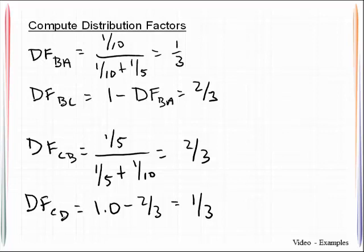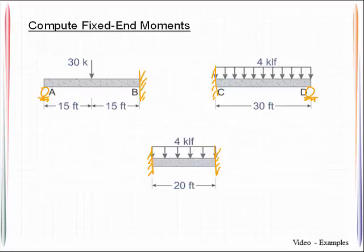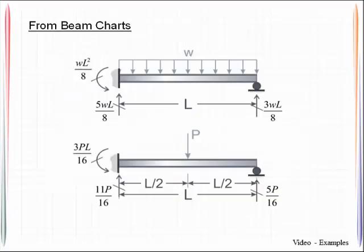The next order of business is to compute the fixed end moments. We recognize the support conditions of each of the members as shown, either fixed roller or fixed fixed. So to get those fixed end moments, we would take a look at beam charts. As long as we have beam charts to show fixed roller conditions, we can identify that we've got this WL squared over 8, which for us would be 4 kips per linear foot times 30 feet squared divided by 8.